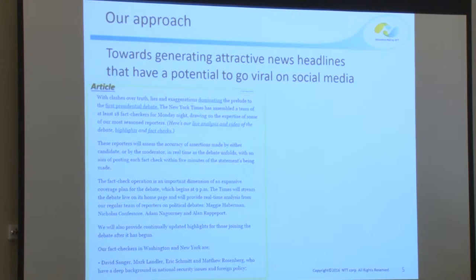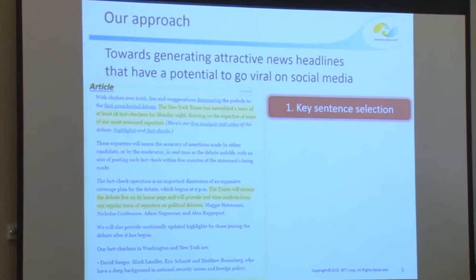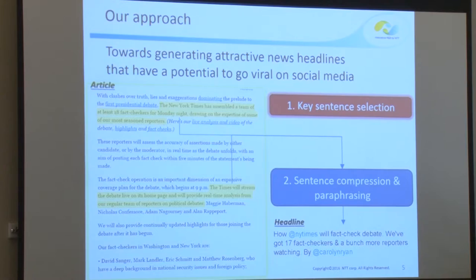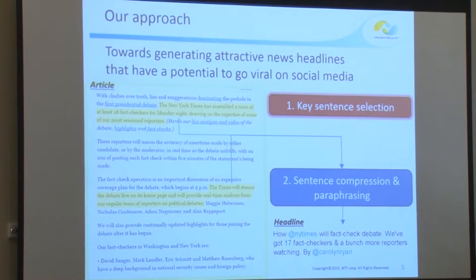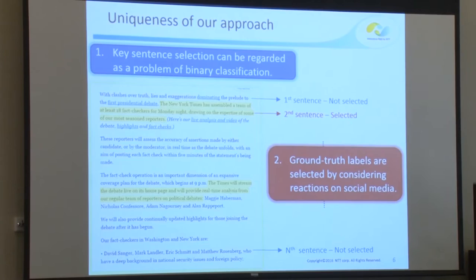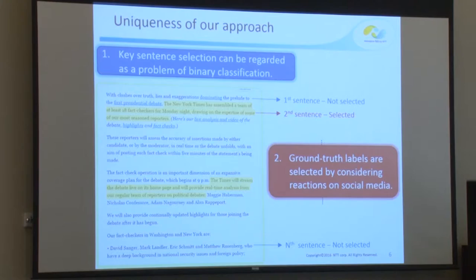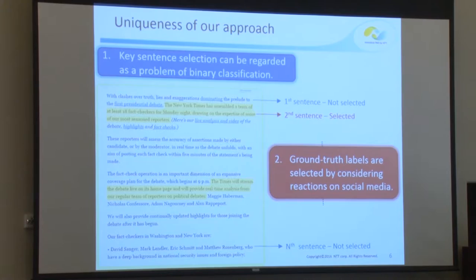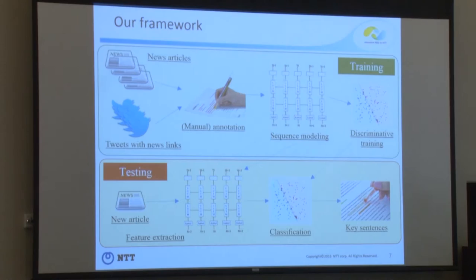Our work presented in this talk provides a novel solution for how to generate more attractive headlines. Our approach is similar to standard extractive document summarization: first, key sentences are extracted from a given news article, then the selected key sentences are compressed and rephrased to form a headline with a predefined length. In this work, we focus on the key sentence selection part. Key sentence selection can be regarded as a binary classification problem, where each sentence is a sample and the key sentences are the positive ones.